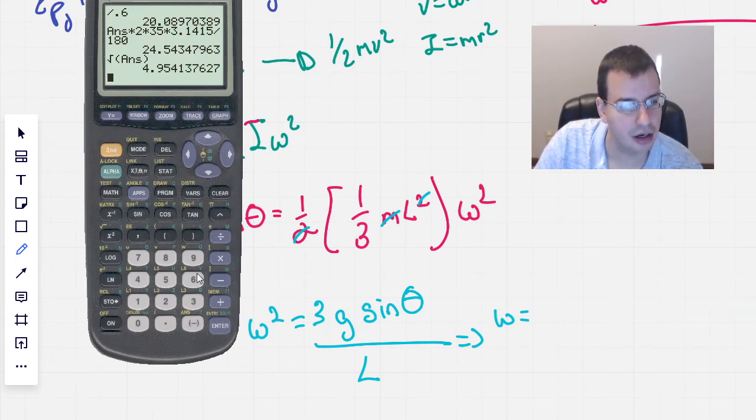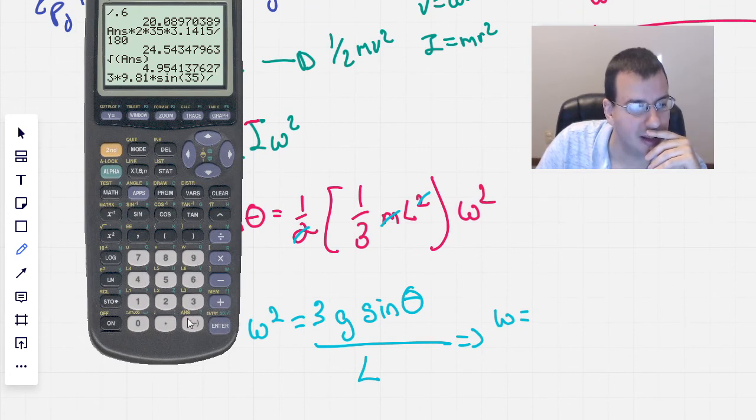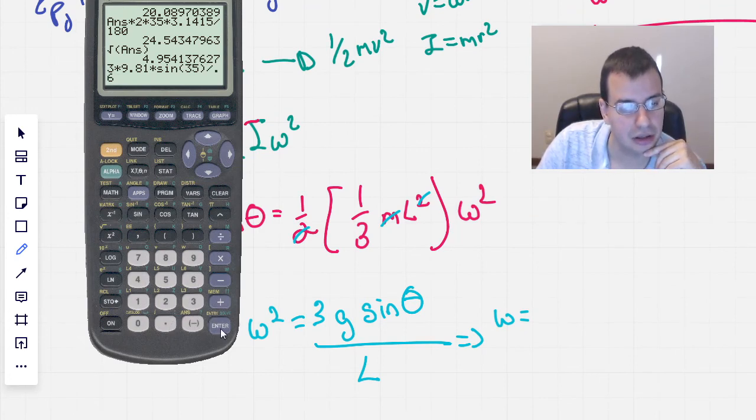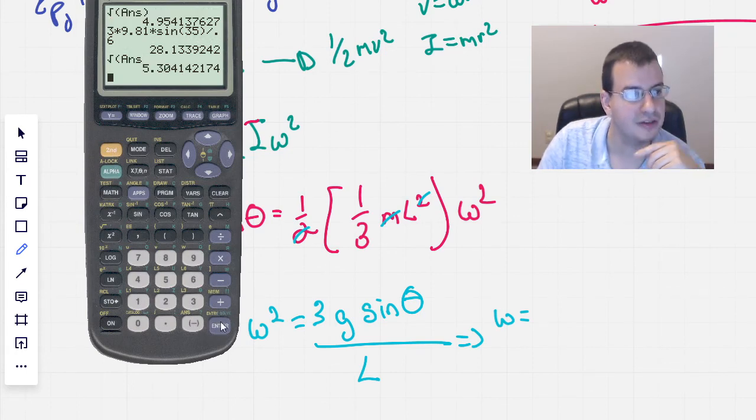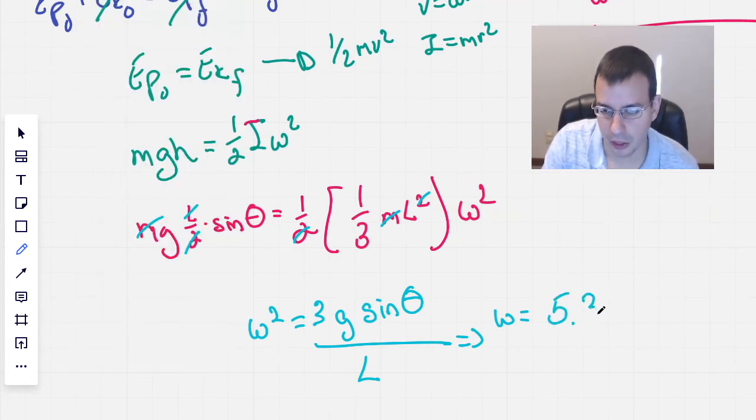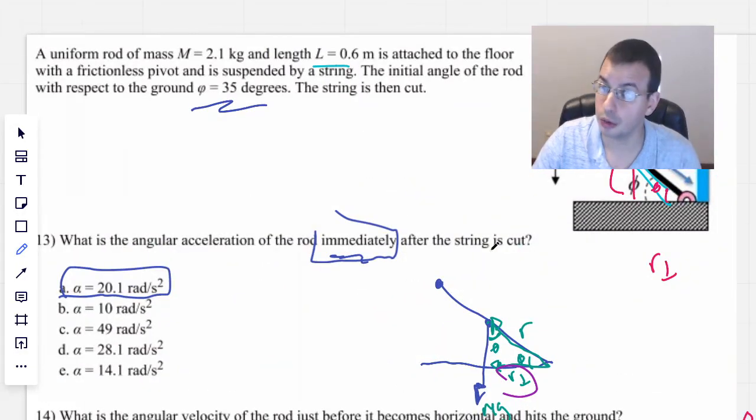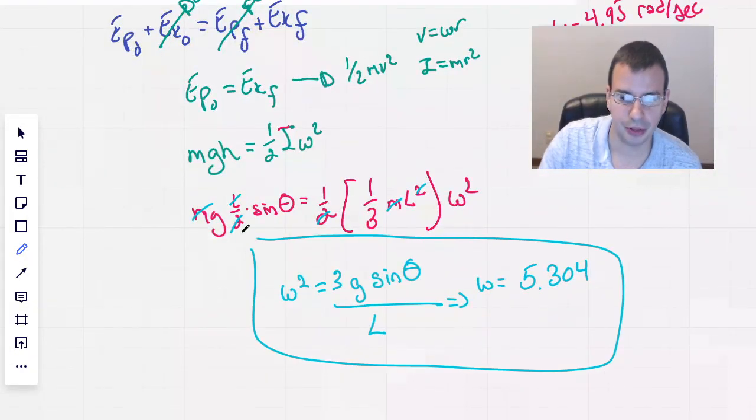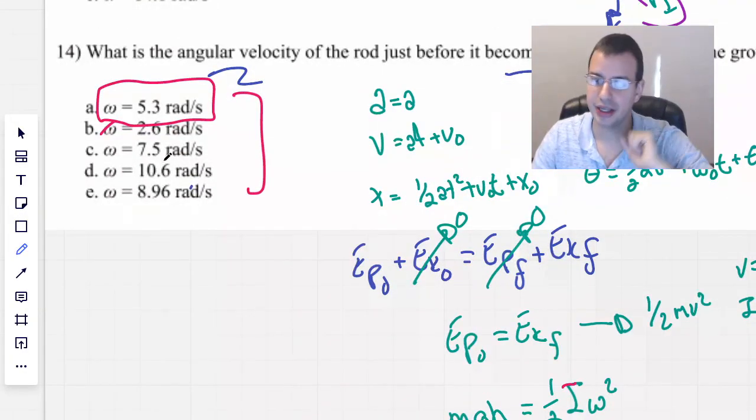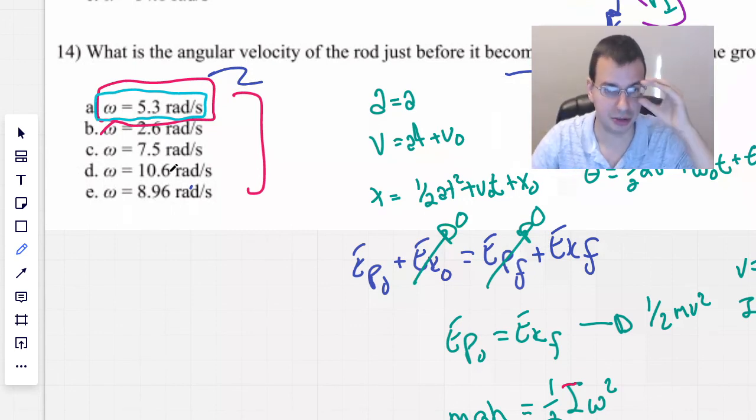Make sure we're still in degrees. We are. 3 times 9.81 times sine of 35 divided by I think it's 0.6 gives us 28. Square root gives us 5.304. Make sure the length actually was 0.6. It actually was. So we're good there. 5.304. And the answer we guessed with our terrible approximation turned out to be adequate. So 5.3 radians per second was the answer. If we solved it assuming a constant acceleration, which it's not, we would have gotten 4.95, which is just a little bit less.